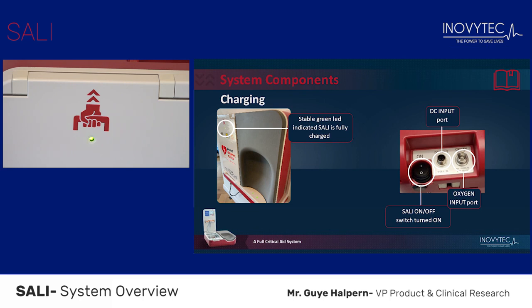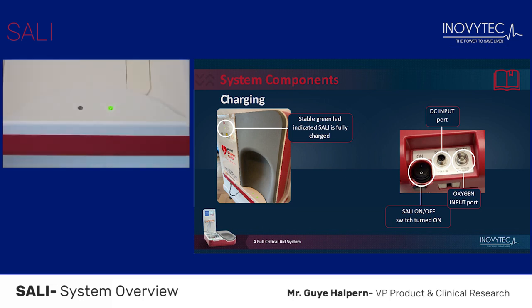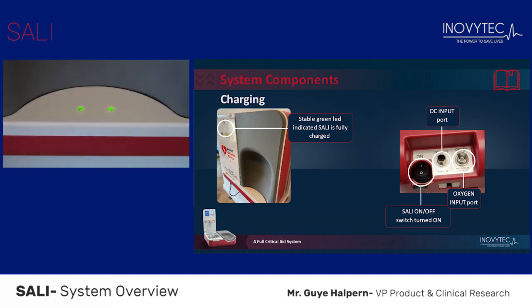A steady green light indicates the unit is fully charged. A blinking green light indicates the unit has more than 50% power and is being charged. A blinking orange light indicates the unit has less than 50% power and is being charged. A steady orange light indicates the unit has less than 50% power and is not being charged. A blinking red light indicates a problem with the connection to the cloud. A steady red light indicates a problem with the battery or the charging protocol. On the docking station, one green LED indicates it is operational; two green lights indicate the unit is placed correctly and the docking station is operational.